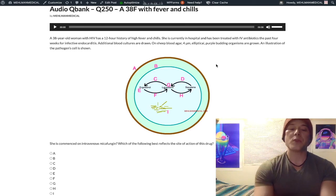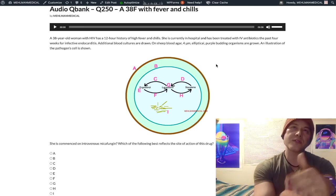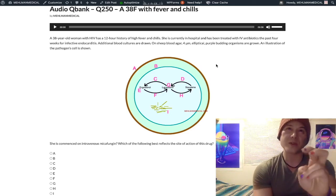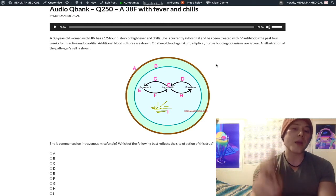It can also cause amphoterrible, quote unquote, which will present as a hypersensitivity like reaction with fever and chills. Even though you're treating an infection that has fever and chills, amphotericin B can cause amphoterrible, which presents as fever and chills. Kind of weird. But hypokalemia, hypomagnesemia with amphotericin B.